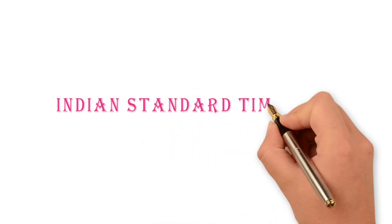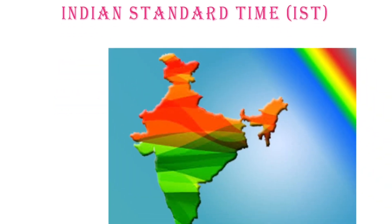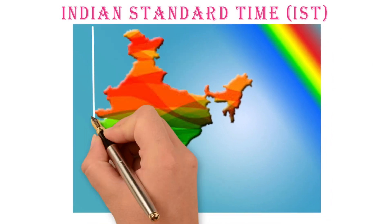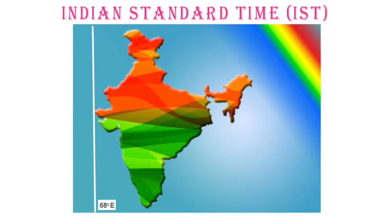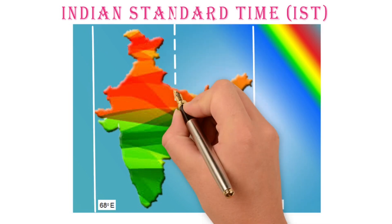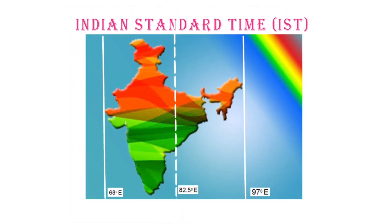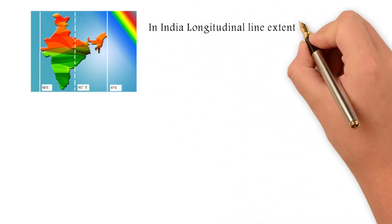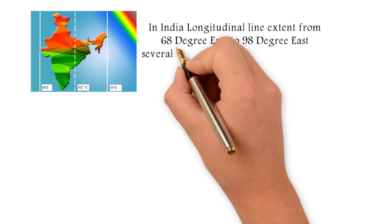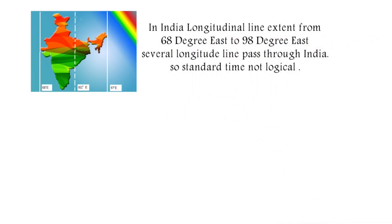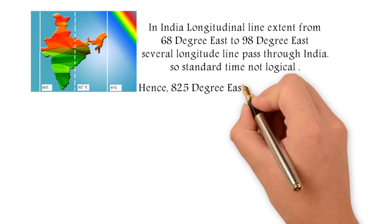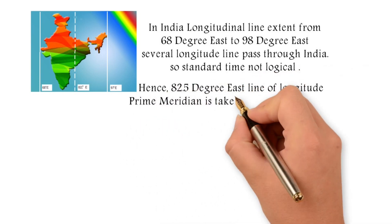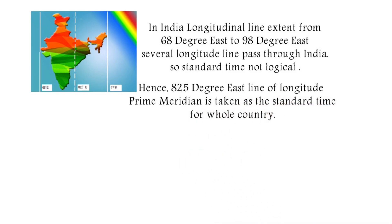Indian Standard Time. India lies between 68 degrees East Longitude and 97 degrees East Longitude. The Prime Meridian is taken as the Standard Time for the whole country.